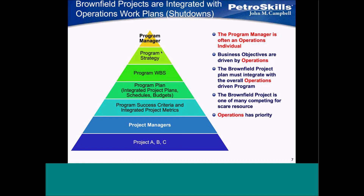Not because they don't form the basis for everything the program manager does, but this is where we sit in the priority. We have to accede to all these other things. And you can see at the bottom: operations has priority over everything. Because the reason they shut things down is to maintain surety of production in the future and ensure that all proper maintenance is done on record during a shutdown.